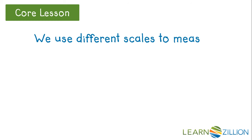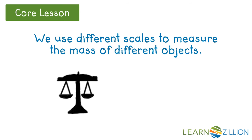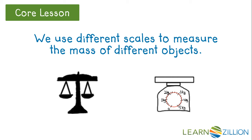We use different scales to measure the mass of different objects. This is a balance scale. We put objects we want to find the mass of on one side, then put known objects with specific mass on the other until they both even out. This is a kitchen or spring scale. Sometimes when we cook, we may use a kitchen scale to help us with the recipe.